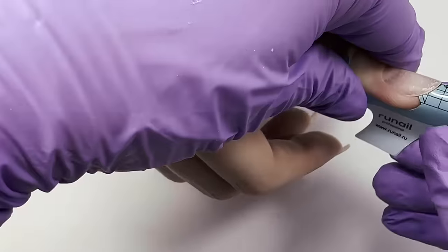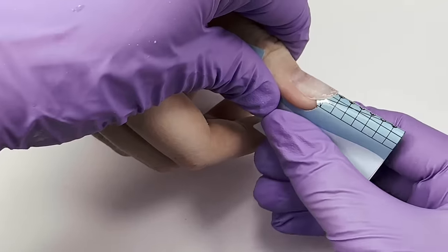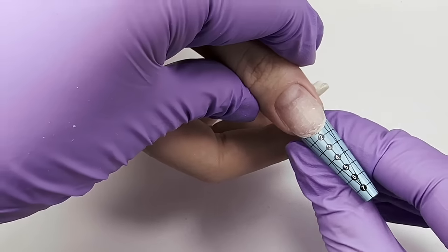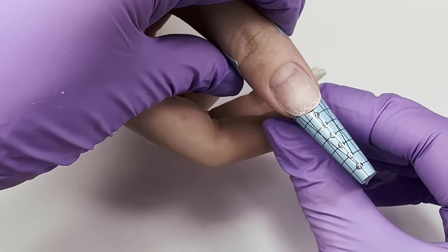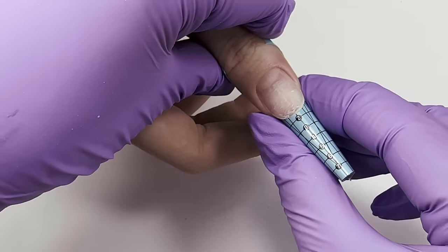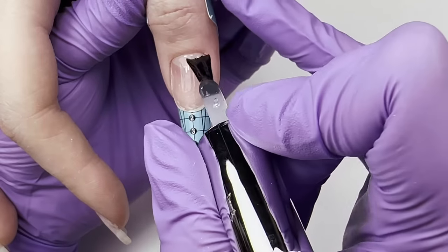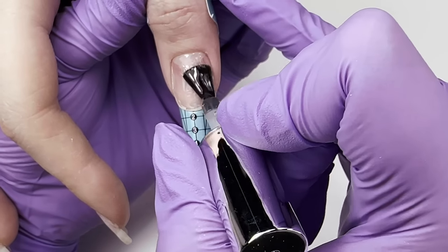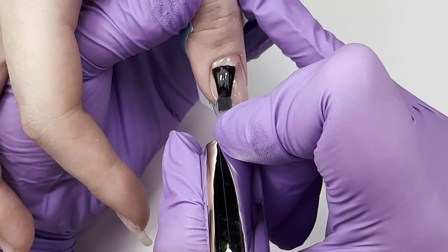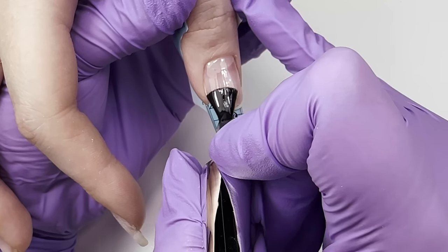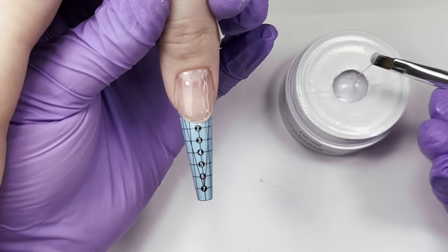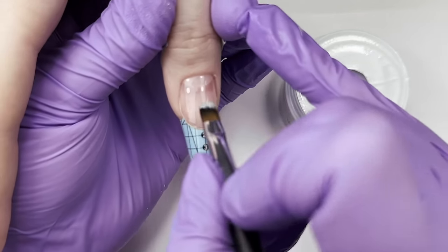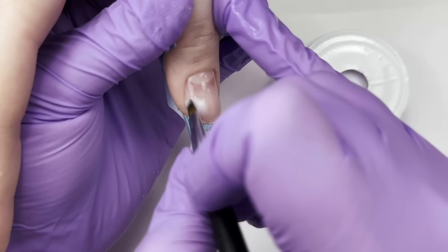While this nail is curing, we can proceed to the next one, the broken one. And I'm going to use traditional forms to fit them and to do this little extension of the free edge. And we need to do the exact same prep for this nail, dehydrator, primer and base coat. I prefer doing this after I fit the form. So I will be sure that I'm not going to accidentally touch it. After curing the base coat for 30 seconds, it's time to do extensions.